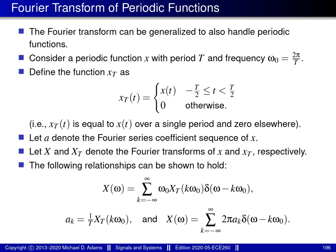As mentioned earlier, the classical definition of the Fourier transform can be extended in order to handle functions that are periodic. Suppose that we have a periodic function denoted by little x that has the fundamental period capital T and the fundamental frequency omega naught, which is equal to 2 pi over capital T.